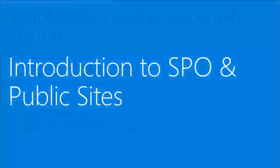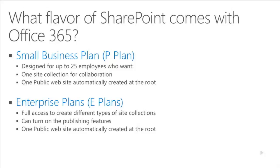Let's jump into public sites. If you're familiar with SharePoint Online and Office 365, you have a couple of plan options. They're basically broken into two groups: the small business plan, designed for up to 25 employees with a single site collection and one public site; and the enterprise plan, which offers more flexibility — infinite scalability as mentioned in the keynote. On the enterprise side, you can turn on publishing, create all kinds of different site collections, but you still only get one public site.